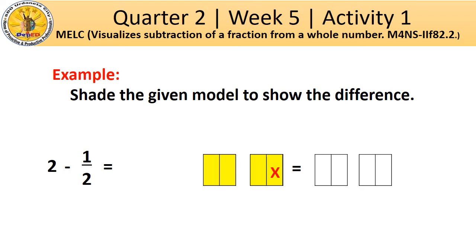Take away that part. Then, shade the remaining squares to visualize the difference. So, 2 minus 1 half equals 1 and 1 half.